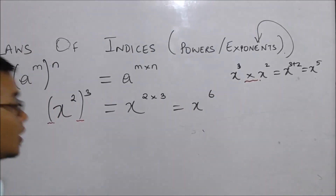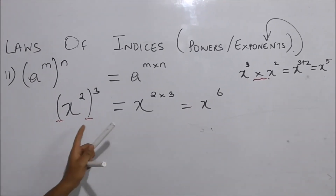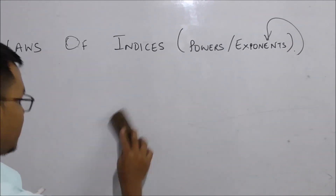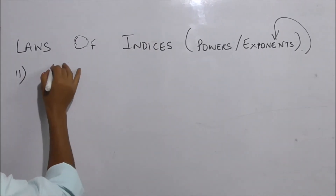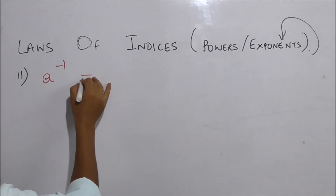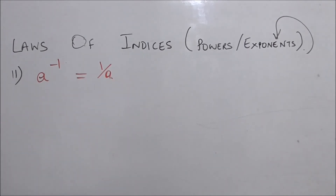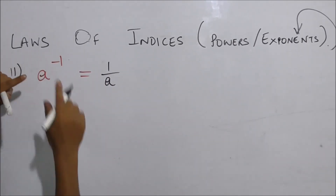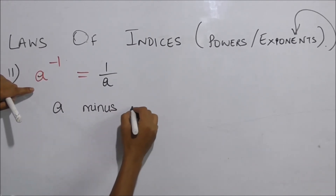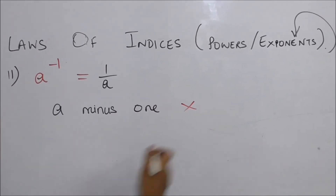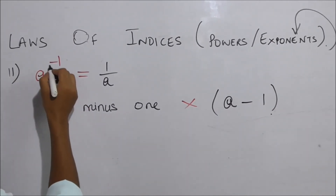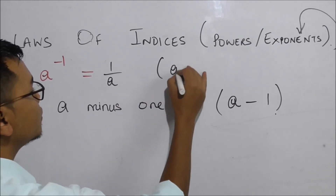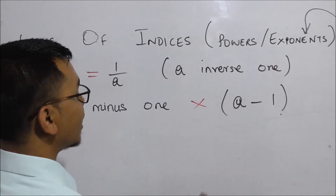We have x squared to the power of 3 into x squared. A inverse — A to the power of minus 1 — is equal to 1 divided by A.